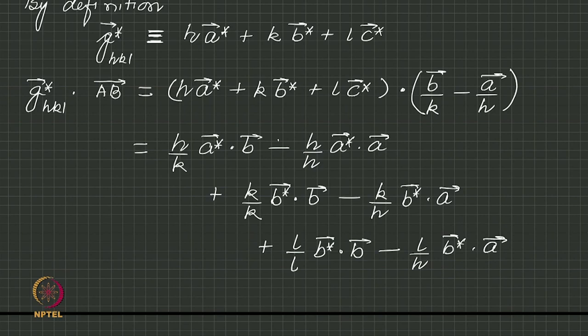Again you can use the relationship between a star and b. a star dot b is 0, b star dot a is 0. Sorry, did I make a mistake? Yeah, I was making a mistake. Let me correct it. These are c stars, l c star we have. c star dot a and c star dot b, both of which are 0.